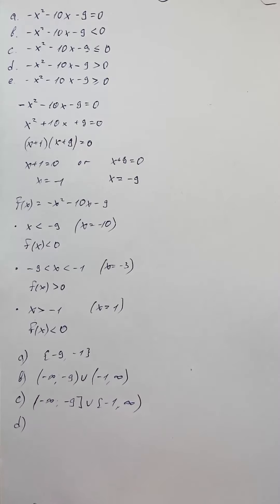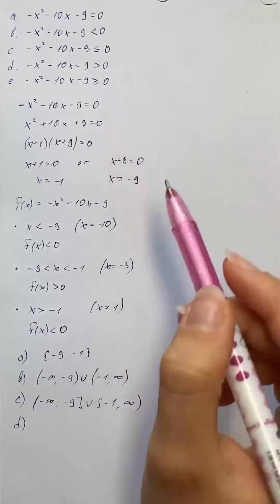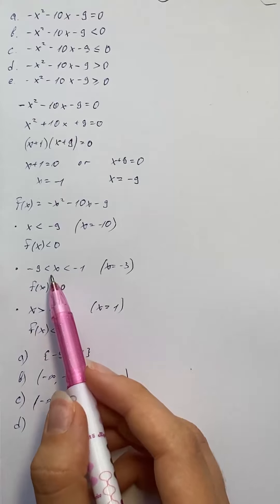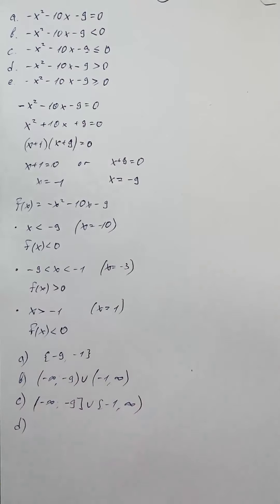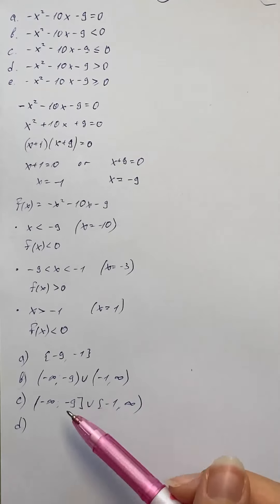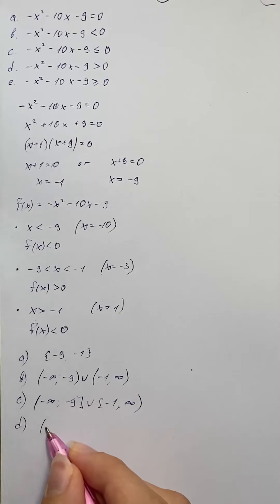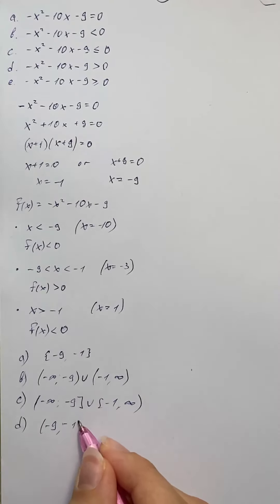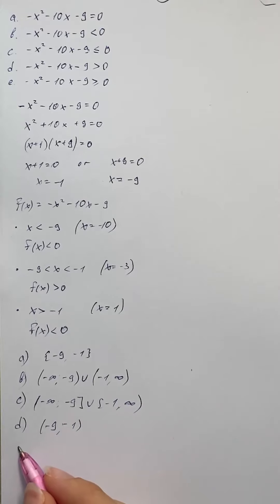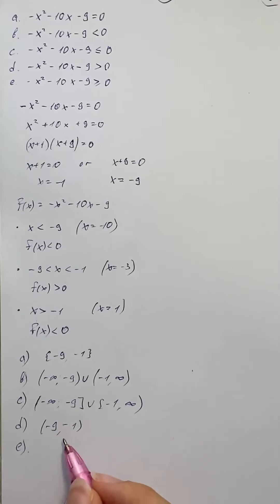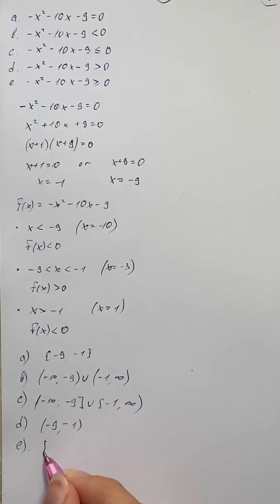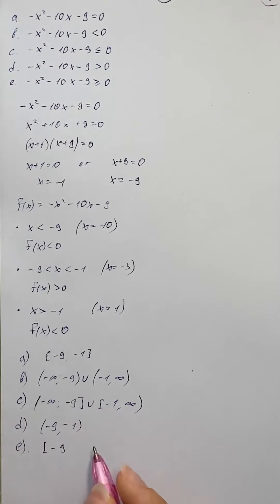For part d, we use the positive interval where x is greater than negative 9 and less than negative 1, and boundary points are not included, so the solution set is the open interval negative 9 to negative 1 in parentheses. For part e, the same interval applies but boundary points are included, so we use brackets: negative 9 to negative 1.